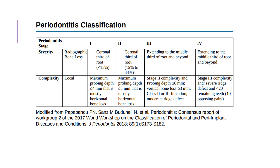In stage 3, bone loss extends to the middle third of the root and beyond. In stage 4, it also extends to the middle third of the root and beyond, but stage 4 would have additional complexity involved with it.